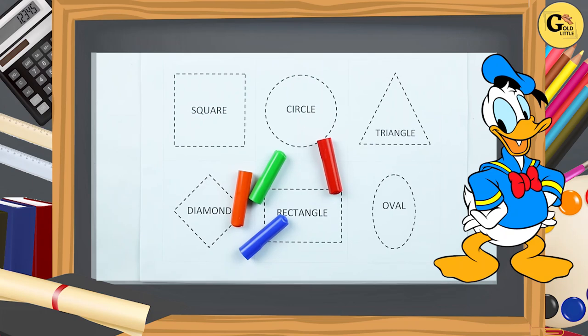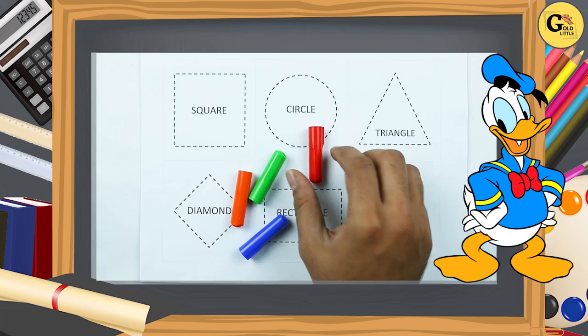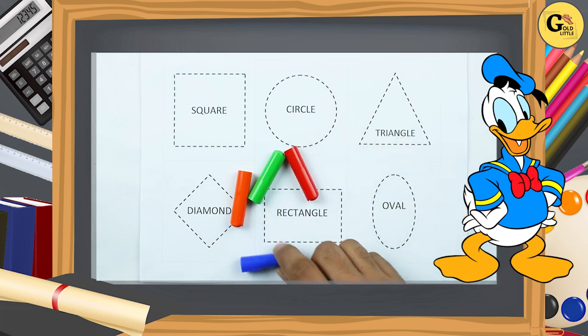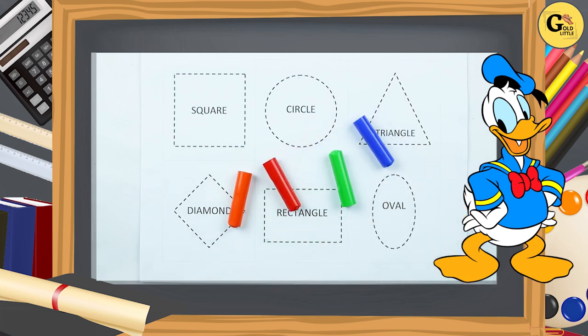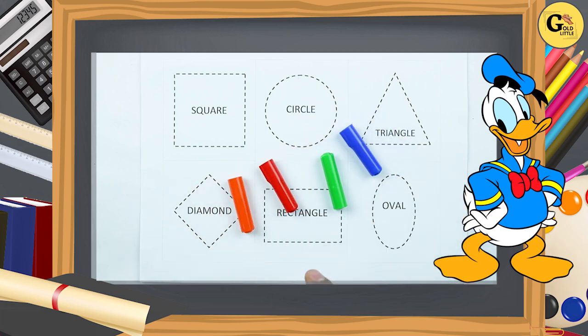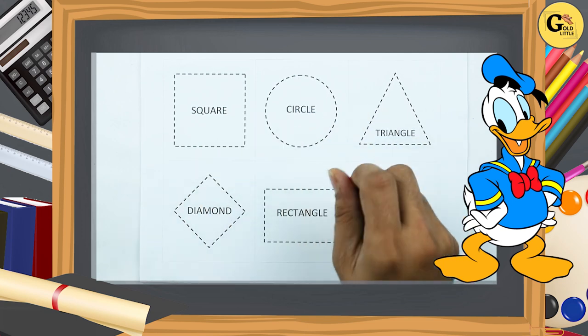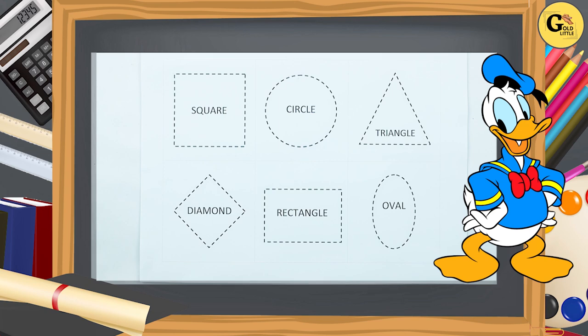Hello friends, today we learn shapes: square, circle, triangle, diamond, rectangle, oval with colors. Red color, blue color, orange color, green color.